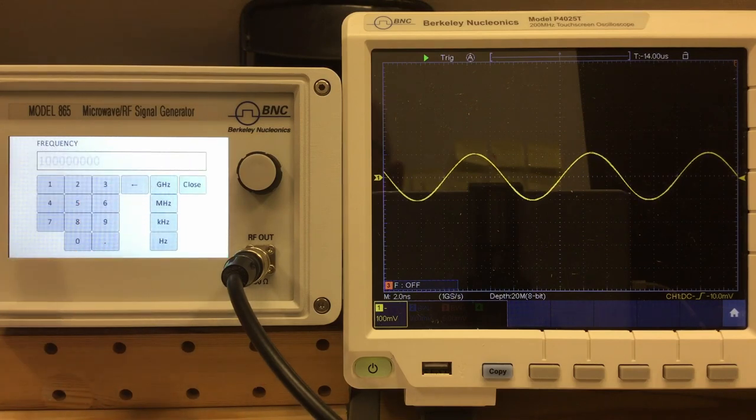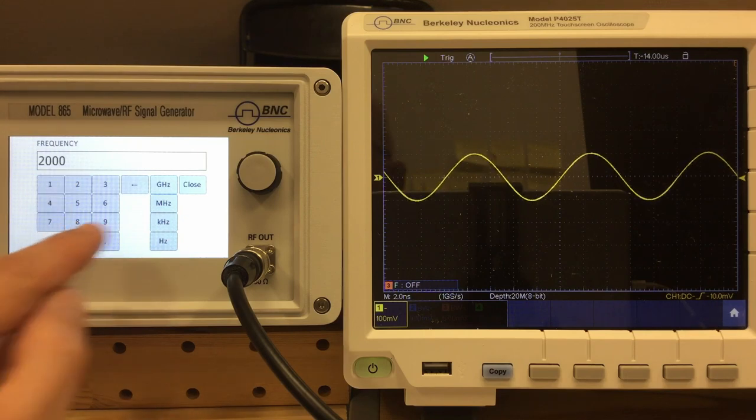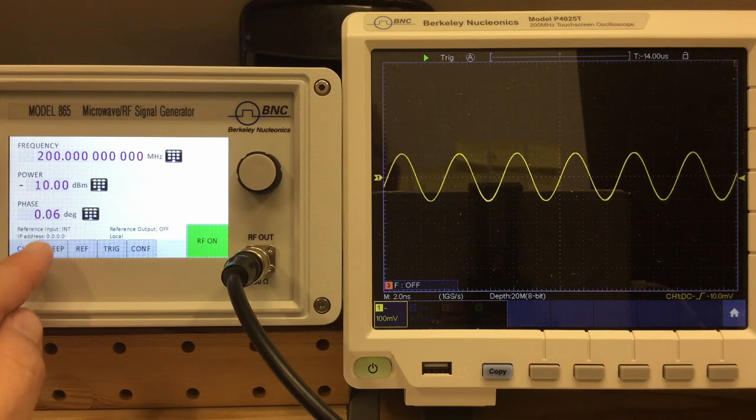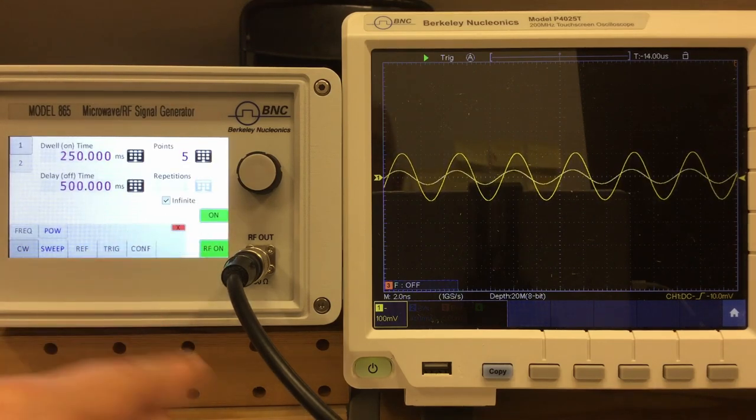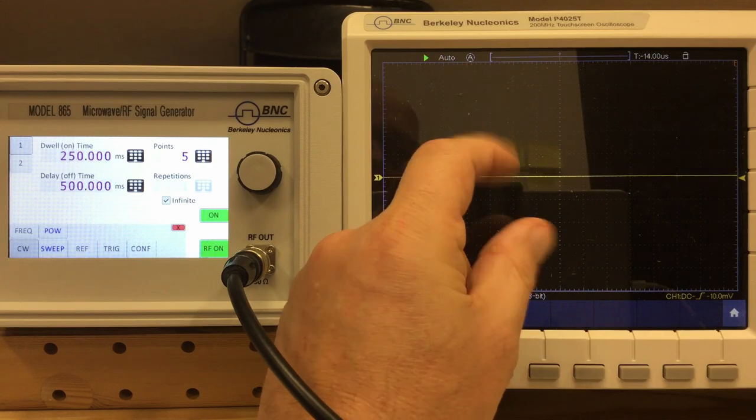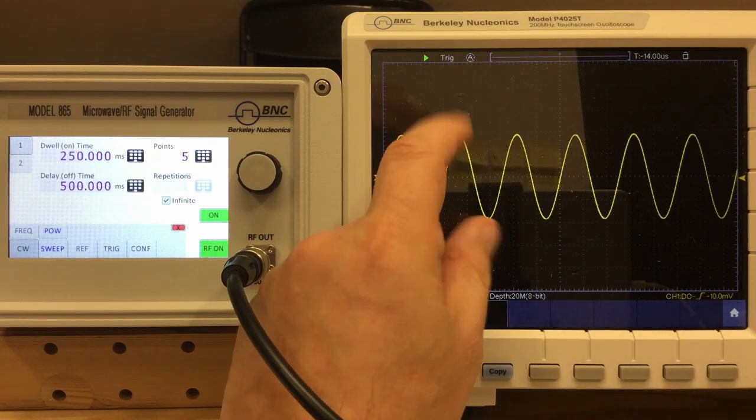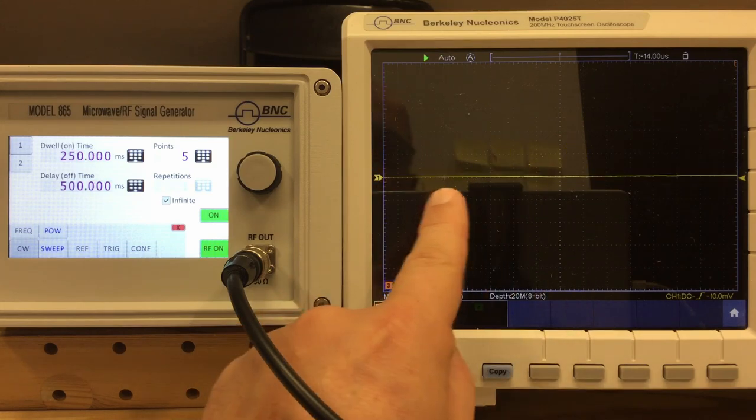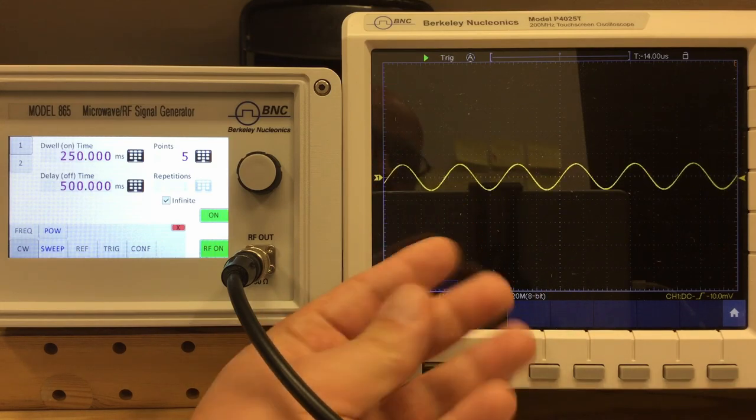And when we switch that on, we see with a constant frequency, our level rising of the signal. In between the signal goes to zero and the frequency of the signal in that case is set here in the continuous wave menu. So if we go here, for example, to let's say 200 megahertz, we go back to our sweep. Then we amplitude modulate, step through different signal levels at a 200 megahertz signal. That's it.